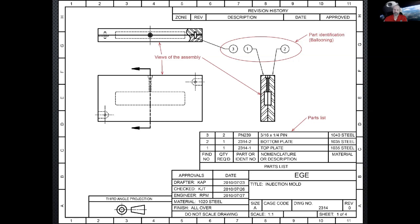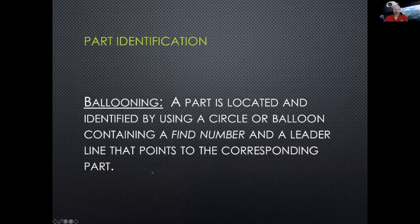In an engineering company, typically one or two people on staff have a PE license and sign off on designs, while the rest do most of the design work. The title block also includes other information necessary for the people who assemble the product, such as what kind of projections are being used. Ballooning is simply a circle with a find number and a leader line pointing to the identified part.